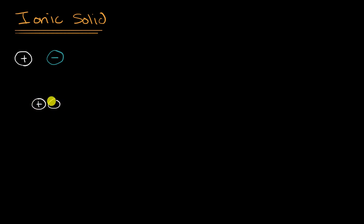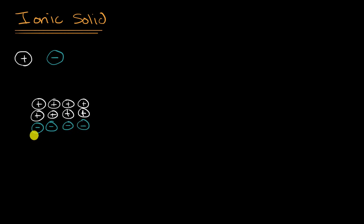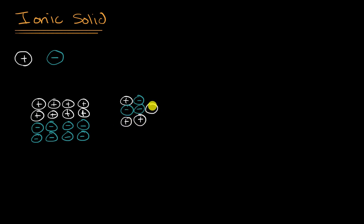Would it look something like this, where maybe the positive ion is all on one side and the negative ion is on the other side — on the bottom — if we were to take a slice? Or maybe it's random, where you have a positive here, some negatives there, a positive and a positive and then a positive over there, and then some negatives elsewhere. Would this be a reasonable configuration as they form these ionic bonds?